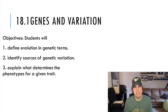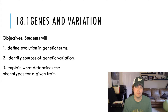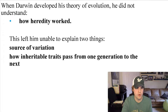Section 18.1 is about genes and variation. I would like for you to be able to define evolution in genetic terms, identify sources of genetic variation, and explain what determines the phenotypes for a given trait. When Darwin developed his theory, he did not understand how heredity worked.